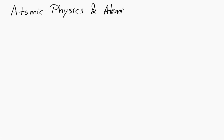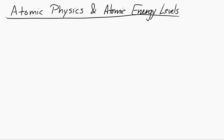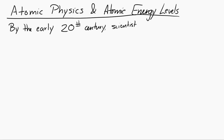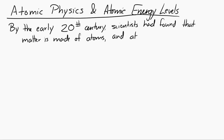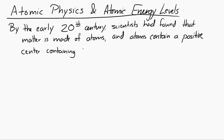Let's take a look at atomic physics and atomic energy levels. By the early 20th century, scientists had experimentally found that all matter is made out of atoms. Atoms contain a positive center containing most of its mass, and an outer region with a negative charge, which had much less mass in it.